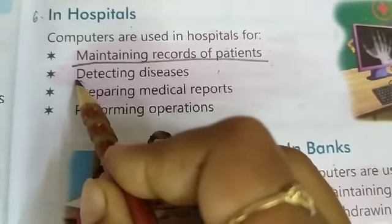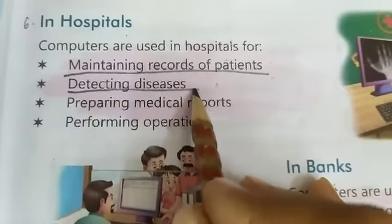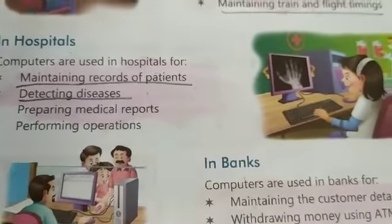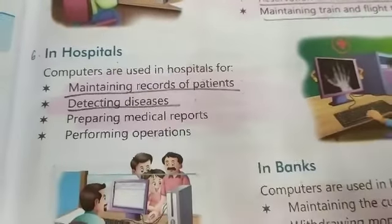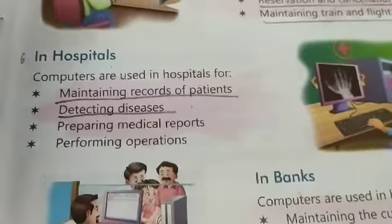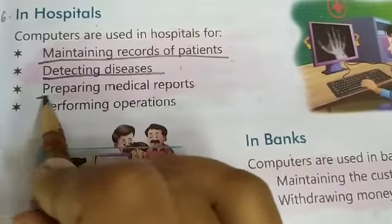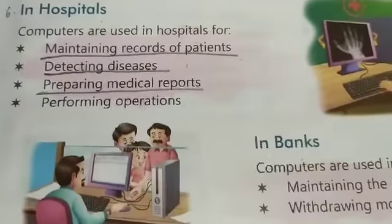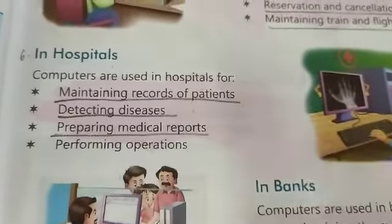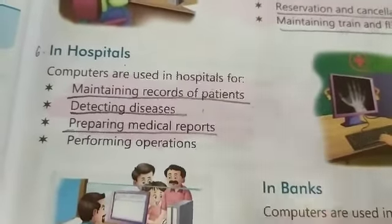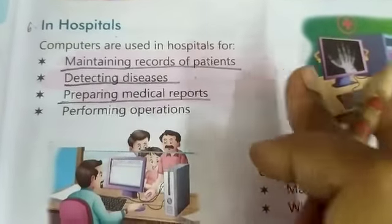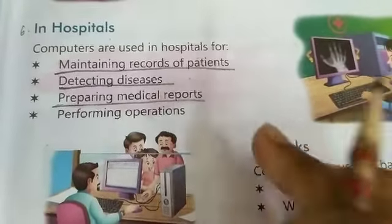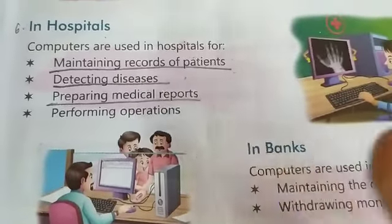Second hospital mein kiske liye use hota hai? Detecting diseases. Computer ke help se hi hum bimari ka pata laga sakte hain. Jo X-ray hota hai, CT scan hota hai, MRI hota hai — yeh sari chizein computer ke help se hi ki jati hain, ek machine ke through ki jati hain. Woh ek computer ka hi form hota hai. Third hai — preparing medical reports. Medical reports prepare ki jati hain. Jaise mali ji jayein aap dikhane jate hain toh aapko ek page milti hai jisme aapki puri report hoti hai — sugar test karana ho toh uska report pura detail ek page pe aata hai, jo computer ke through nikala jata hai, sari filling testing ke baad, aur uska printout aaapko diya jata hai.